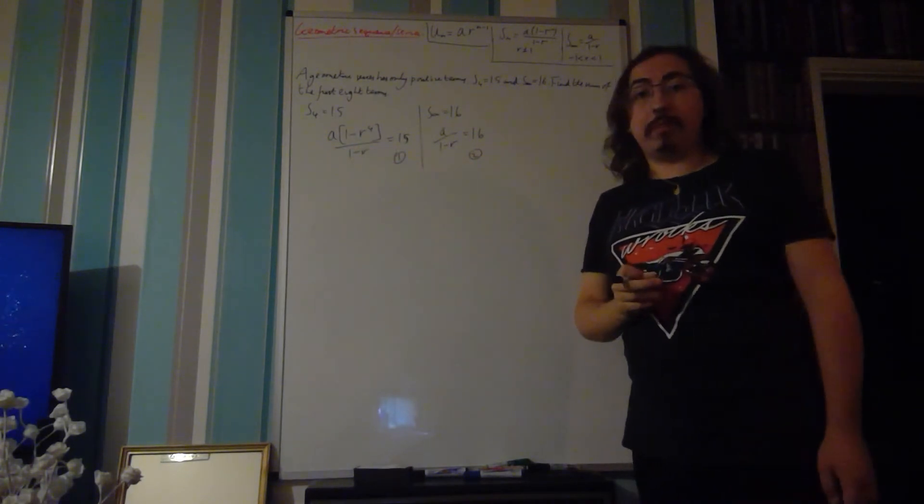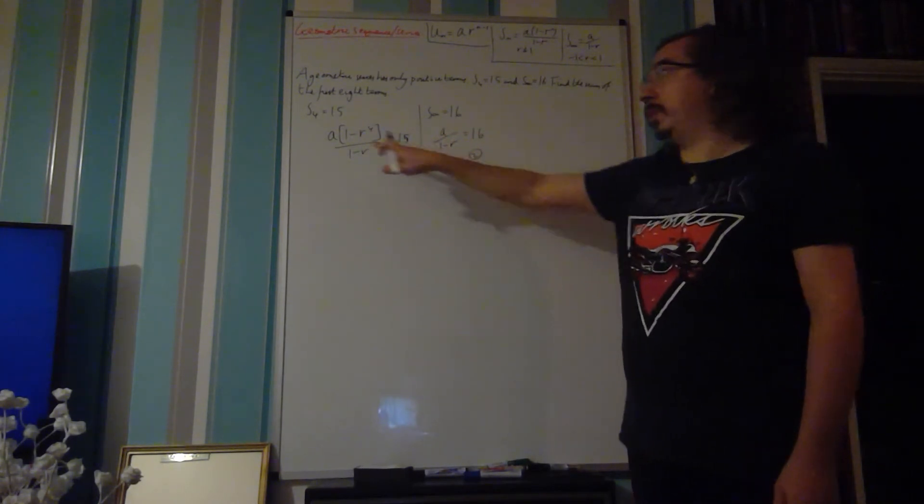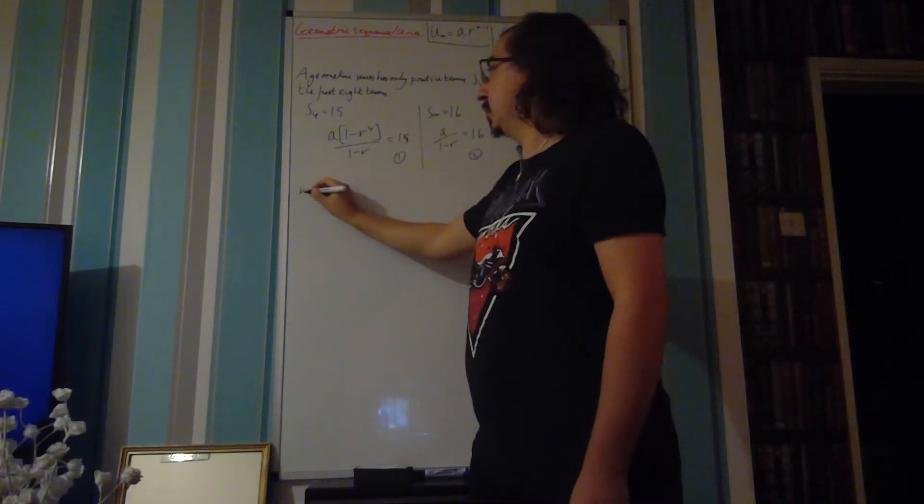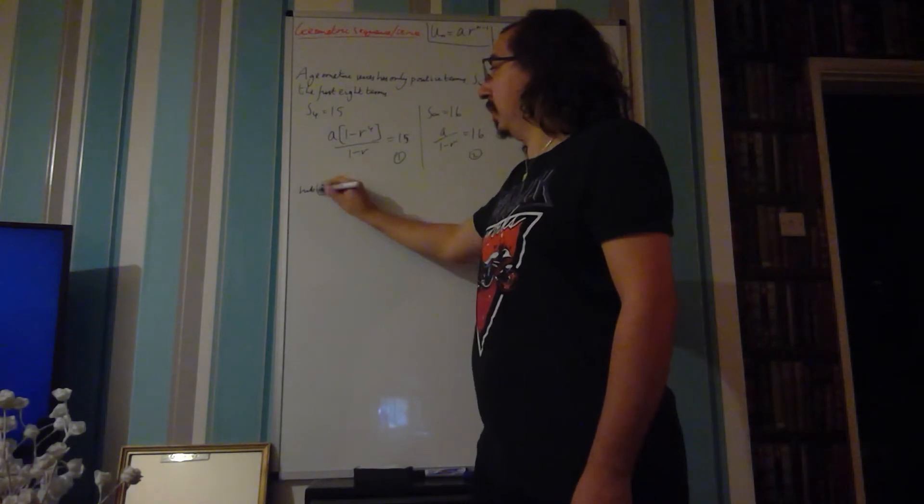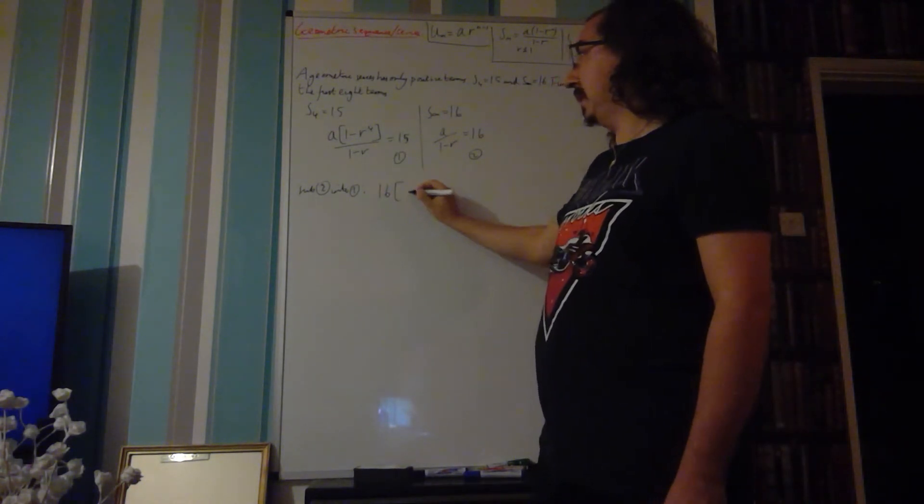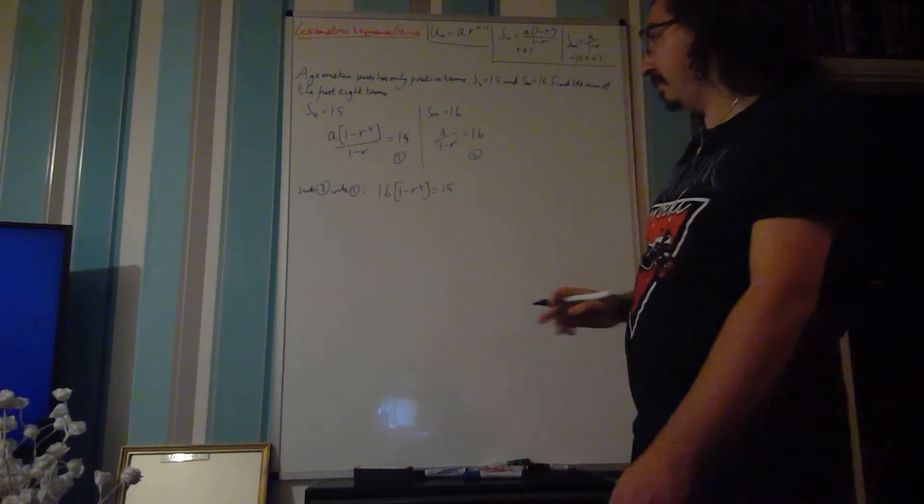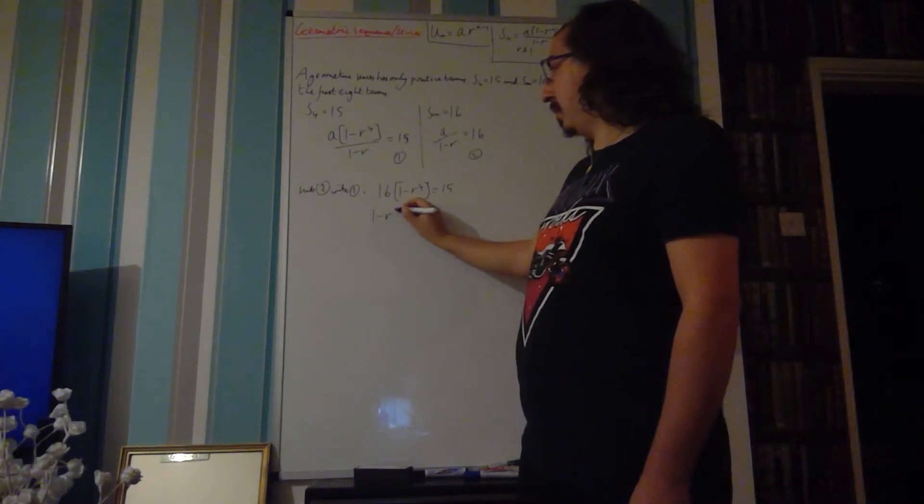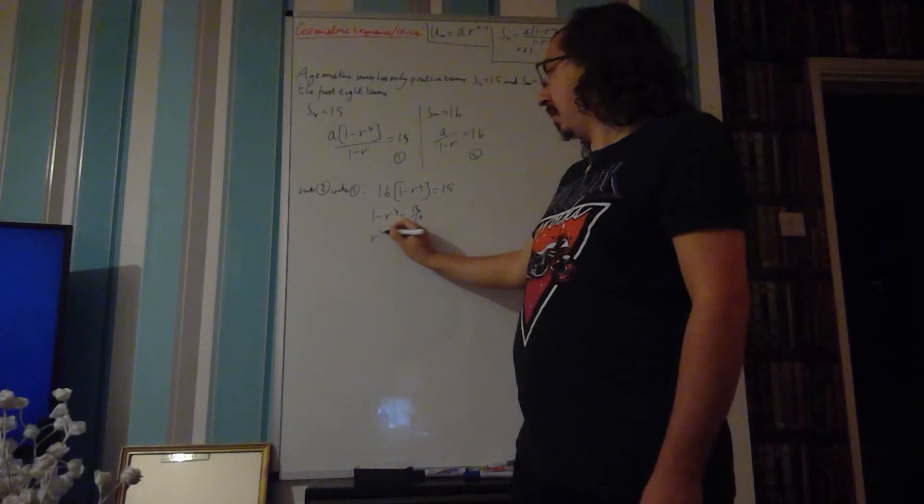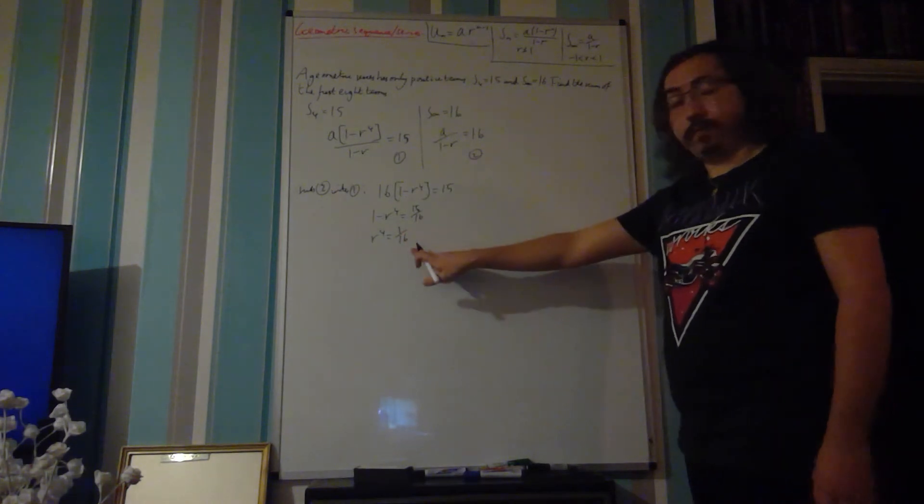We're going to substitute equation 2 into 1, which gives us 16 times 1 minus r to the 4 equals 15. So 1 minus r to the 4 is 15 over 16. Therefore r to the 4 equals 1 over 16.